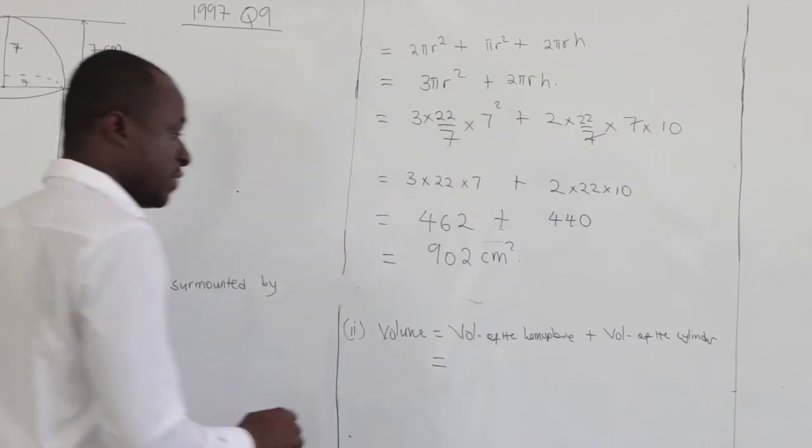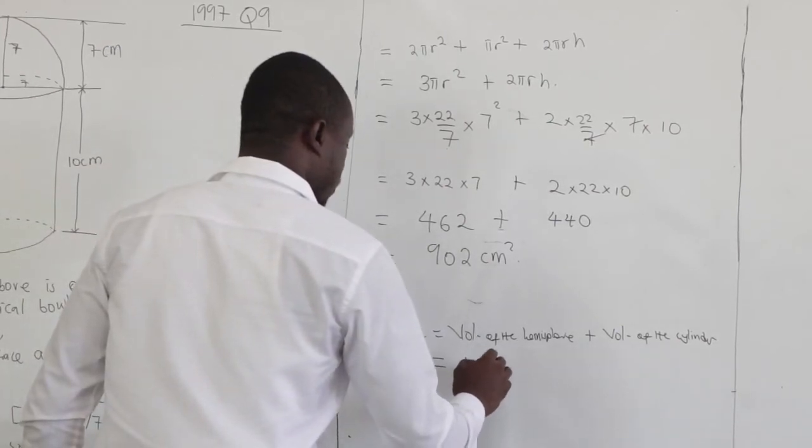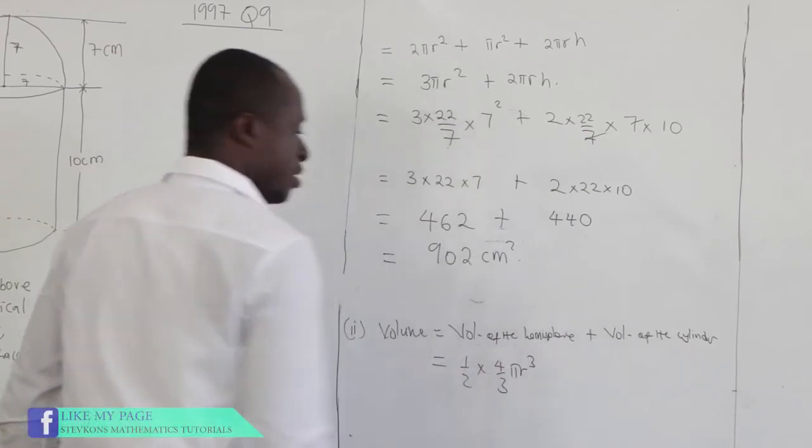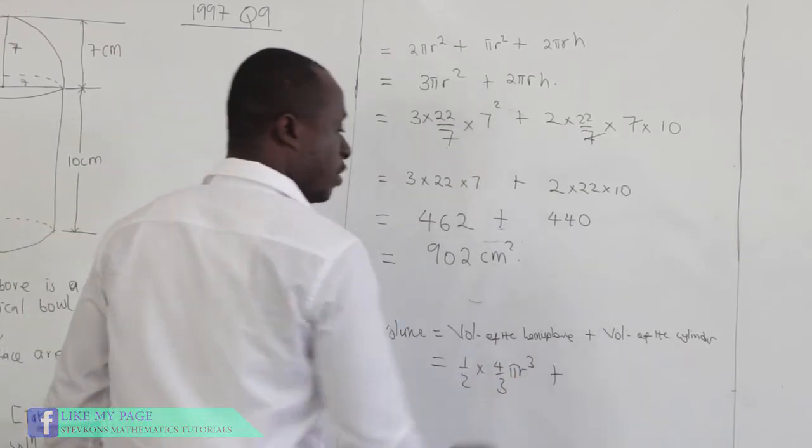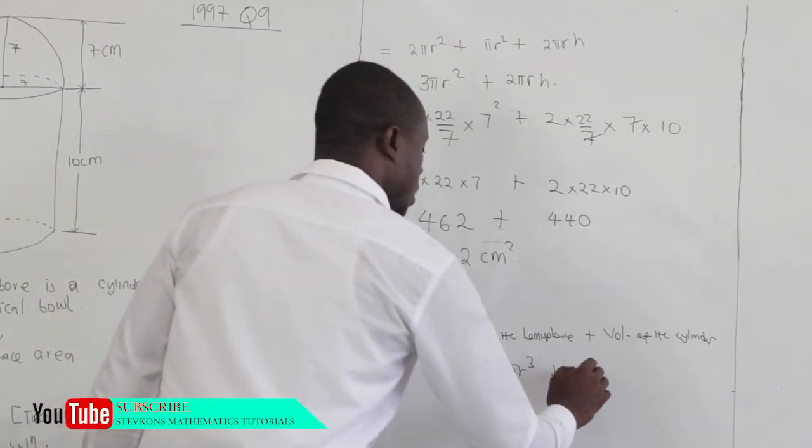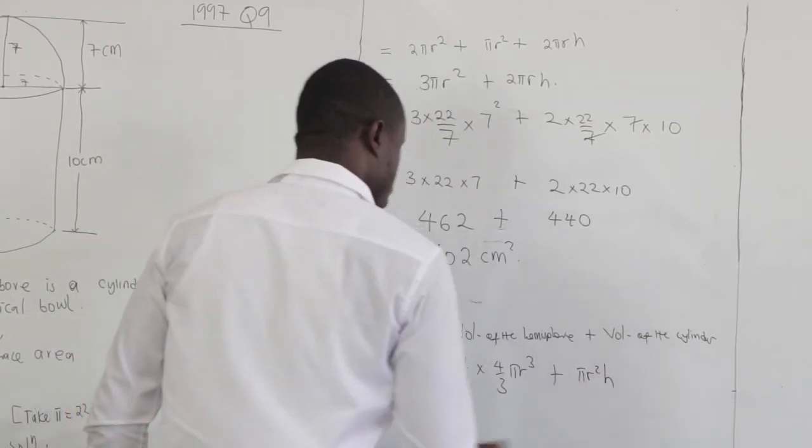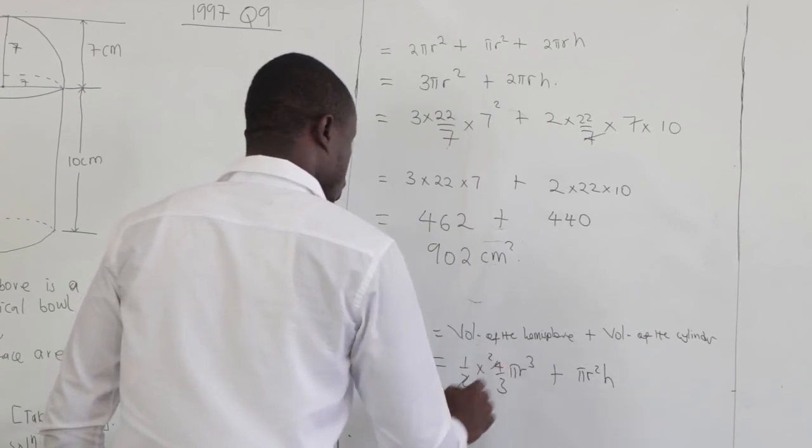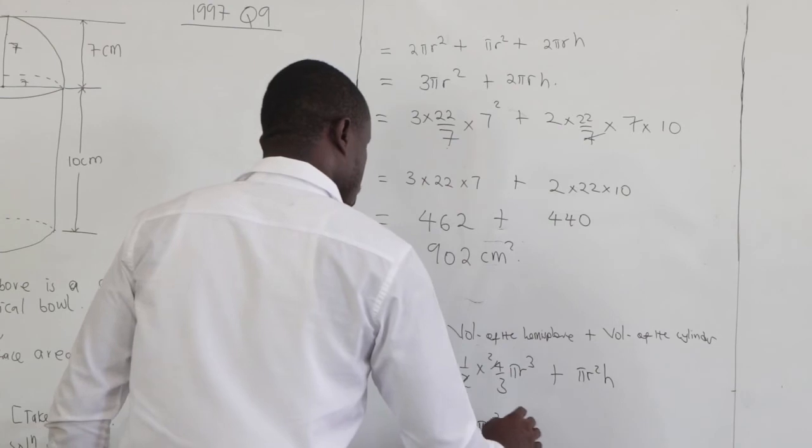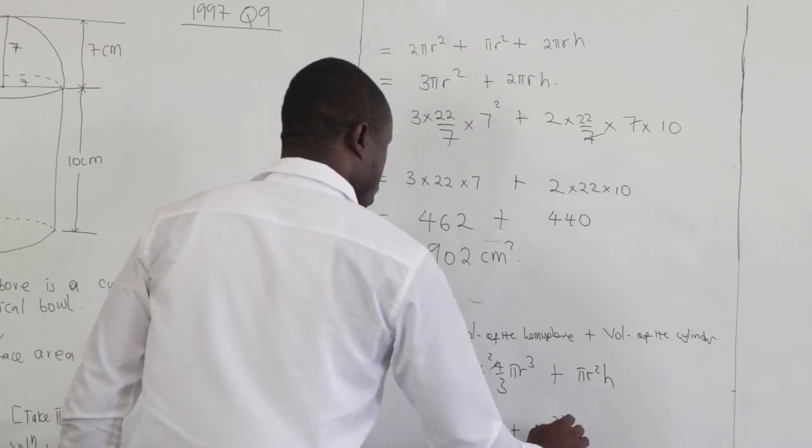Volume of the hemisphere is half times 4 over 3 pi r cube. Volume of the cylinder, that is the cross-sectional area times height. So that is pi r squared h. 2 goes into 4, so you have 2 over 3 pi r cube plus pi r squared h.